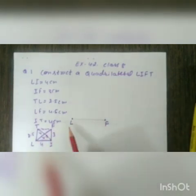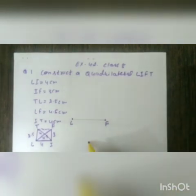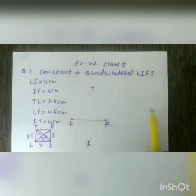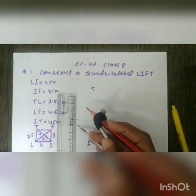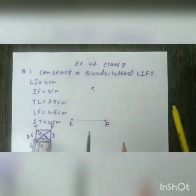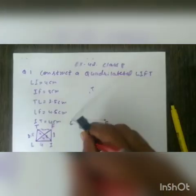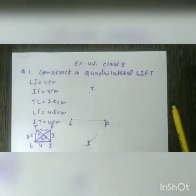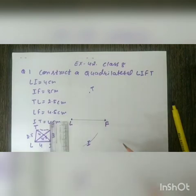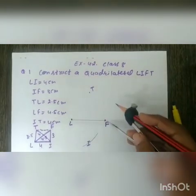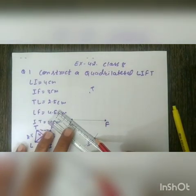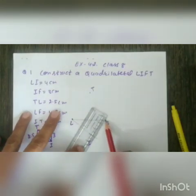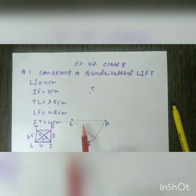Since L is here and F is here, point I should be somewhere below and T somewhere above. Let us draw LI: it is 4 cm, so measure 4 cm with the compass and mark an arc from L. IF is 3 cm, so mark a 3 cm arc from F to intersect the previous arc. This intersection point is I. Join LI and FI — this completes the lower part.